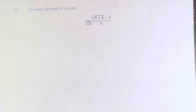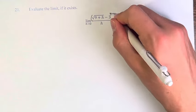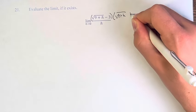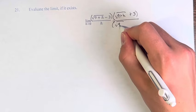What we're going to do here is multiply the numerator by the square root of 9 plus h plus 3, and of course we have to multiply the denominator by the same value.